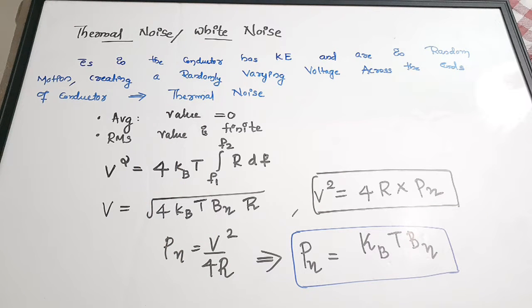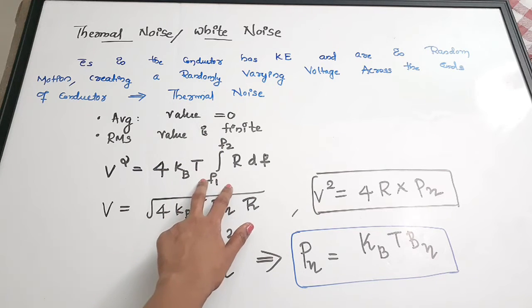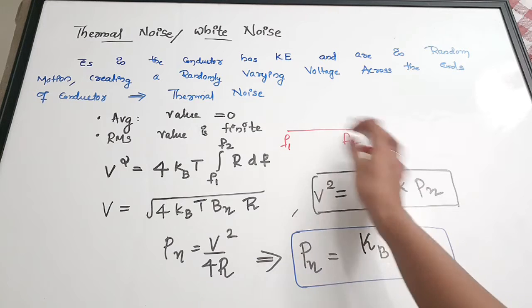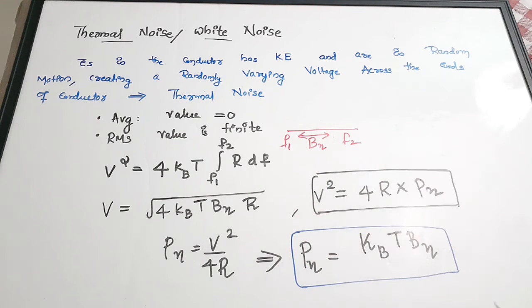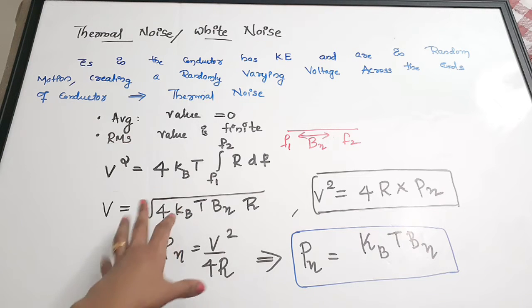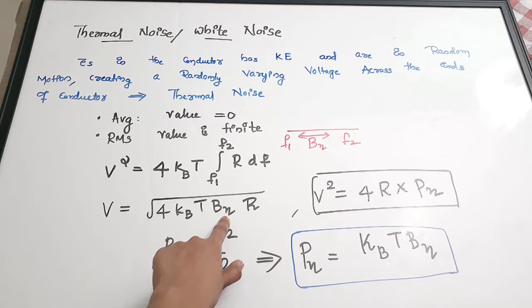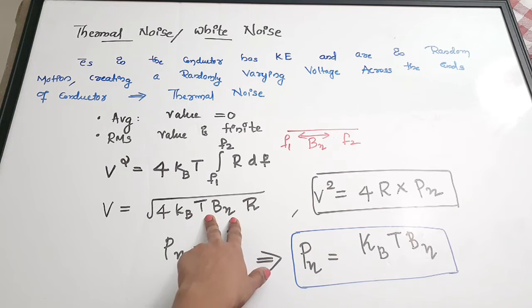Simplifying this integral into a more usable form gives V = √(4·KB·T·BN·R), where BN is the bandwidth (F2 minus F1) and R is the resistance. KB is Boltzmann's constant and T is temperature in Kelvin.